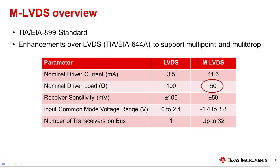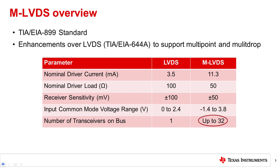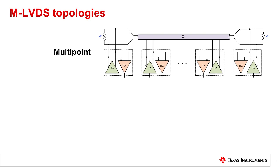In multipoint environments this load can be 50 ohms or less — as low as 30 ohms depending on how many transceivers are present on the bus. Other enhancements include increased receiver sensitivity and wider input common mode range. With these enhancements, MLVDS can support up to 32 transceivers on the bus in total, including drivers, receivers, or transceivers.